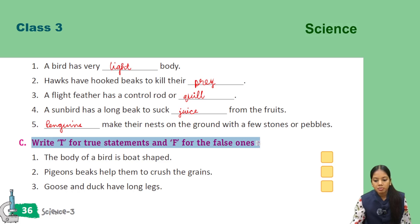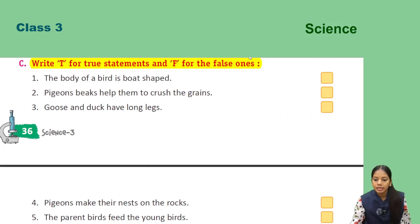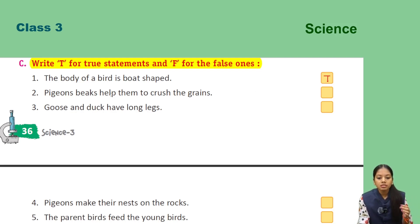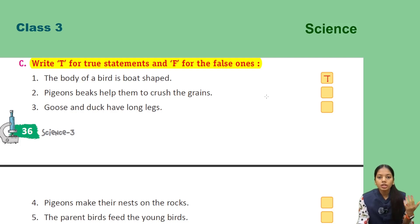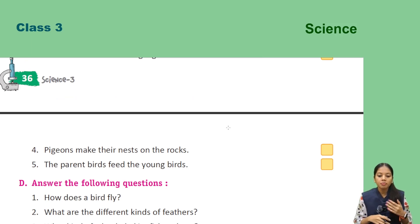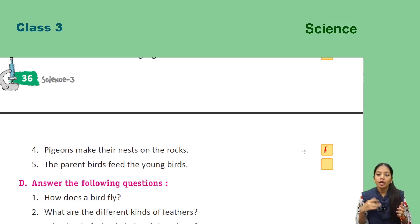Mark T for true statements and F for false ones. The body of a bird is boat-shaped — True. Penguins' beaks help them to crush grain — False, that is pigeons. Goose and ducks have long legs — True for wading birds. Pigeons make their nest on the rocks — False, pigeons nest on window edges. Parent birds feed their young birds — True.